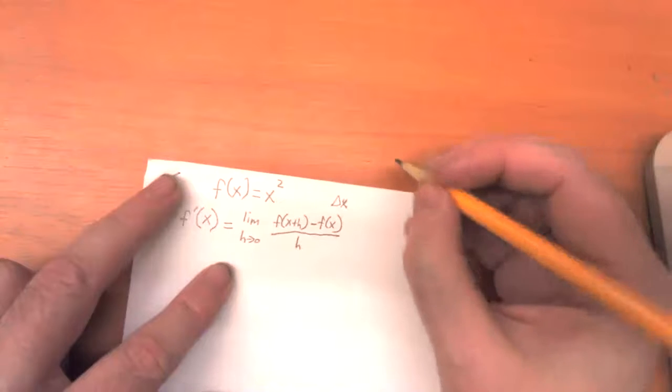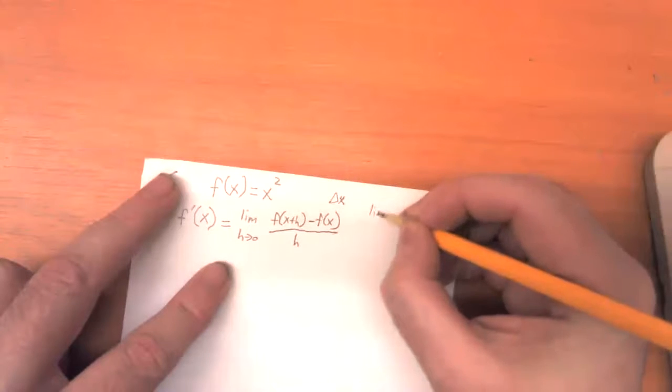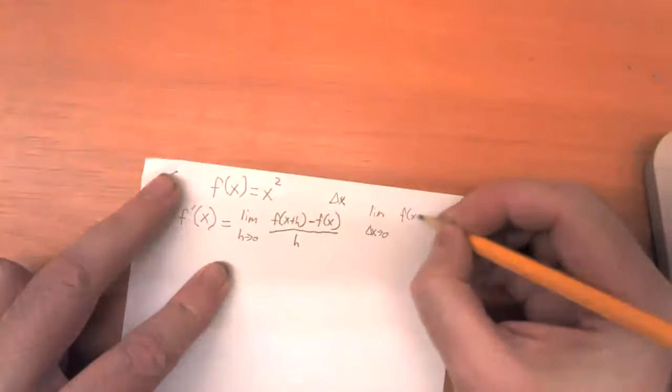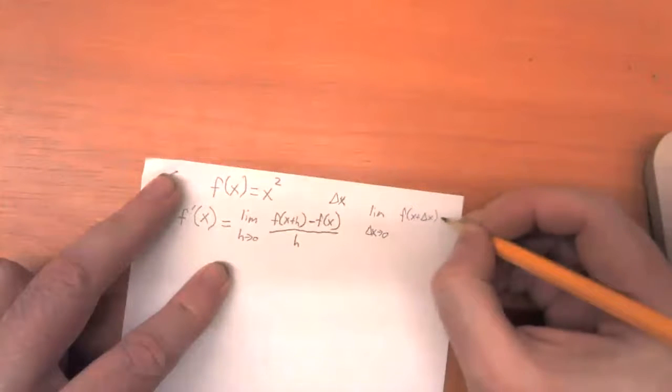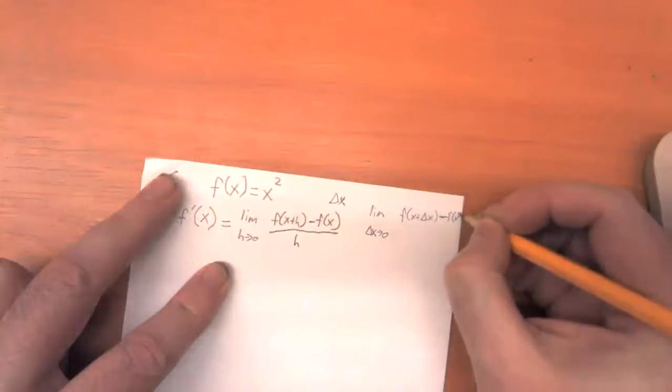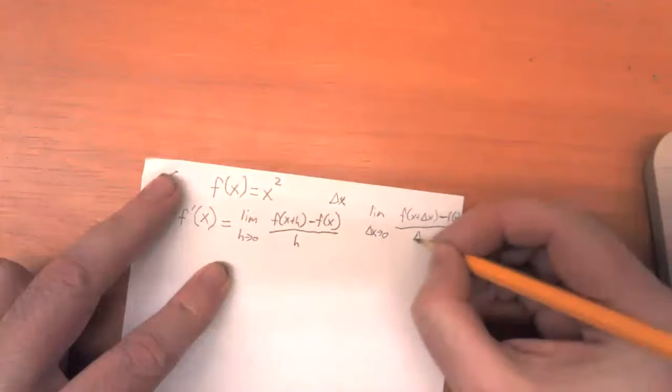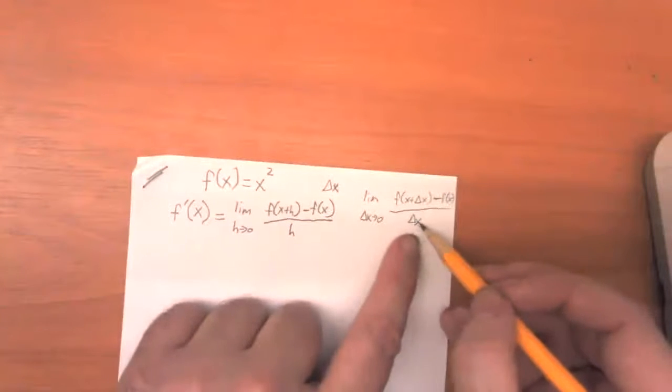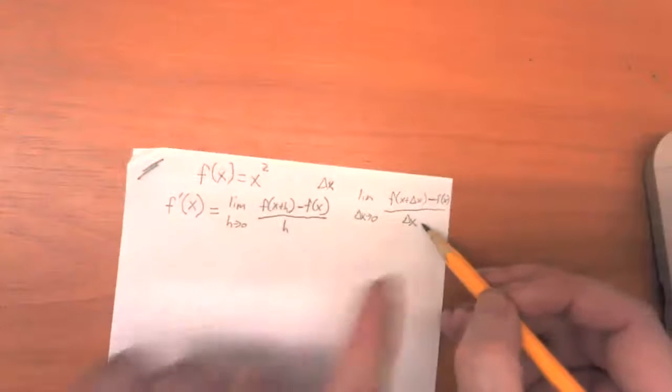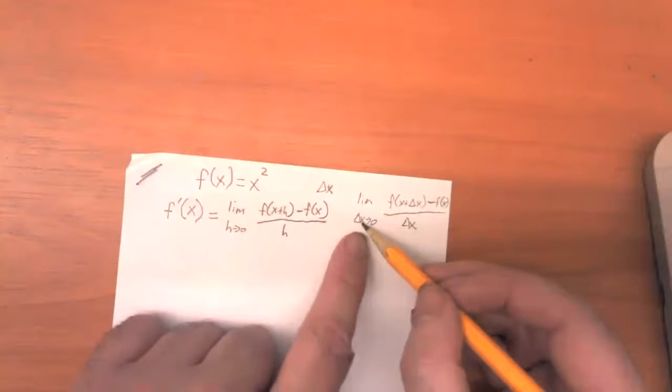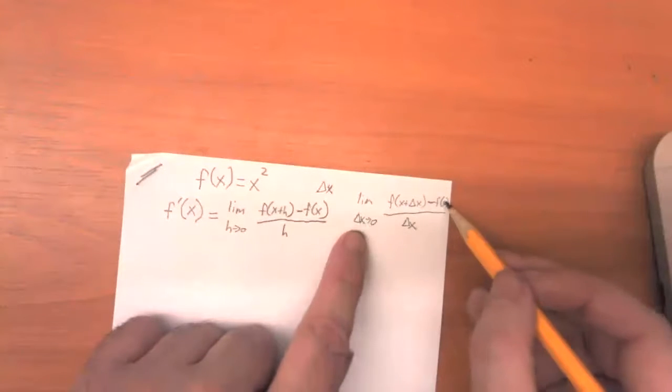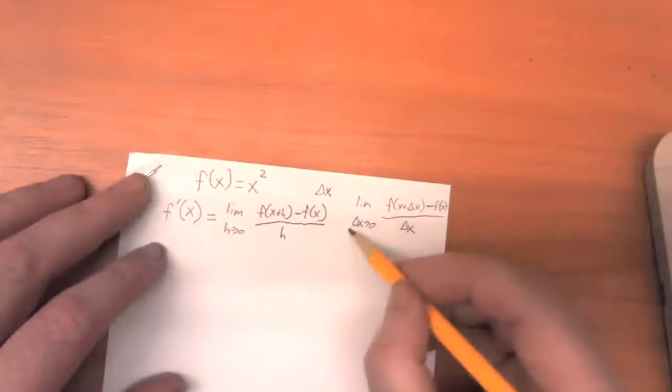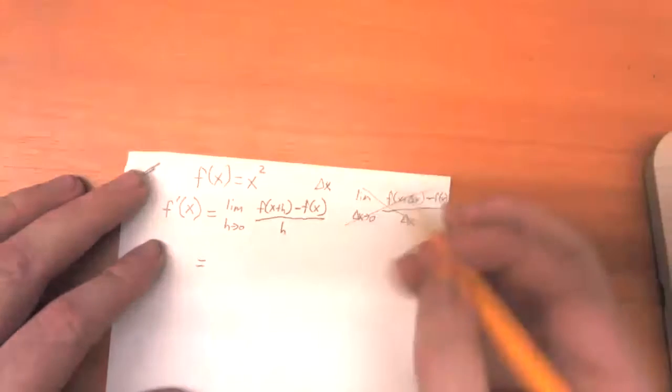So delta x means the change of x. So you might see somebody talking about the limit as delta x approaches zero of f of x plus delta x minus f of x over delta x. And delta x is just another variable name, but it means the change in x. So it's a little bit clearer that we're talking about as the change between the fixed value and the moving value approaches zero. But for now, I'll just stick with h.